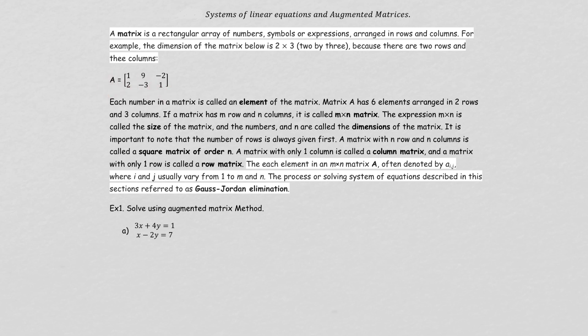A matrix looks like this. From the equation — this is the system of linear equations — but a matrix does not have any variables. You only use the numbers. We call this a 2 by 3 matrix: 2 comes from the rows, 3 comes from the columns. So you read your matrix row by column, row comes first. Each number is called an element — you have 6 elements here.